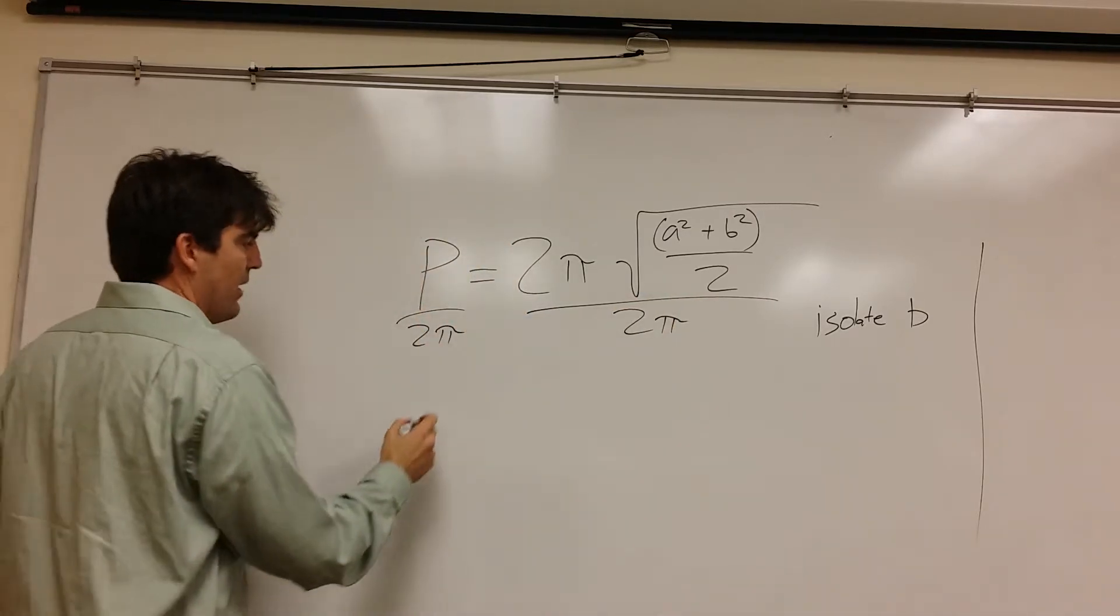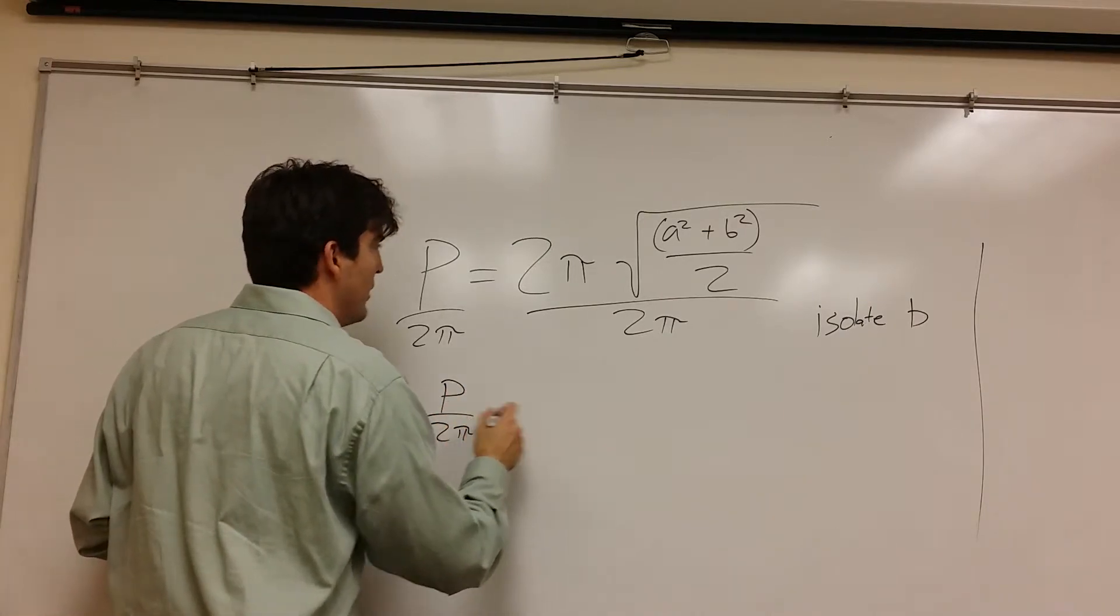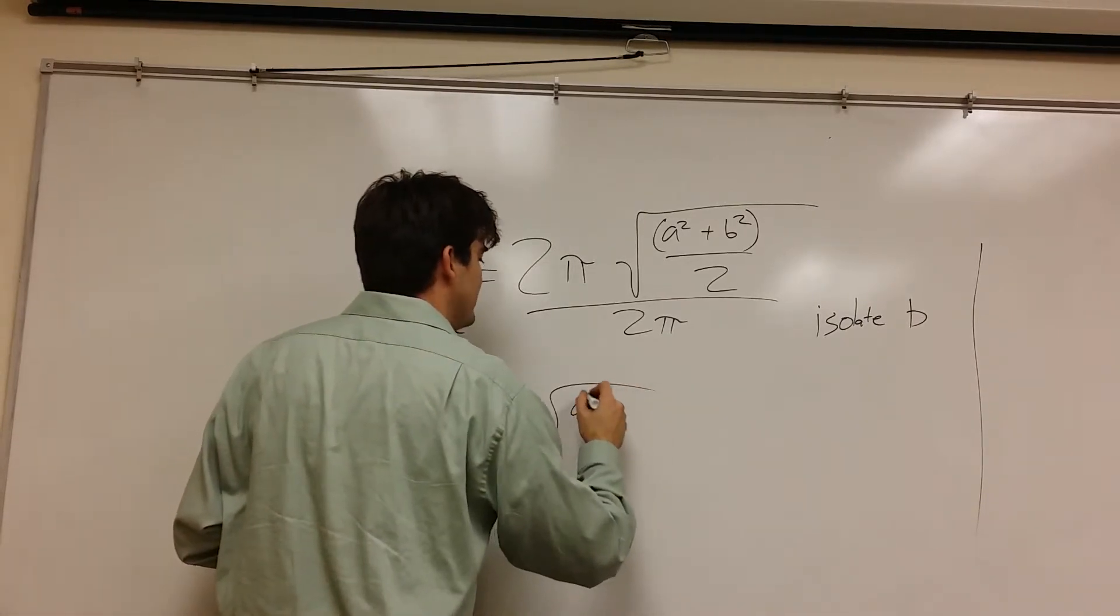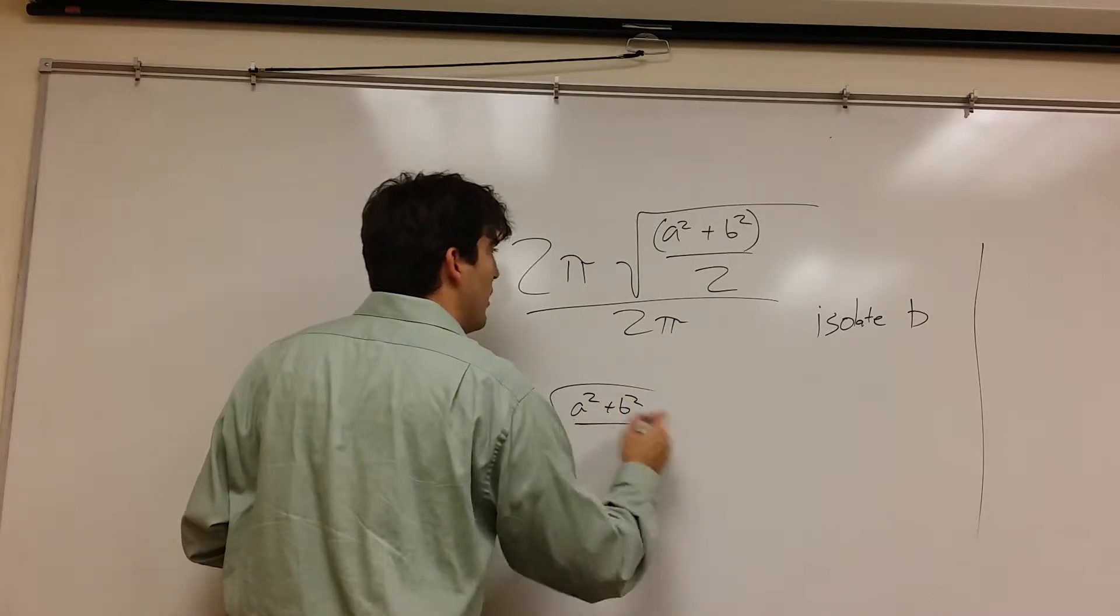Okay, so now I have P over 2π equals the square root of A squared plus B squared all over 2.